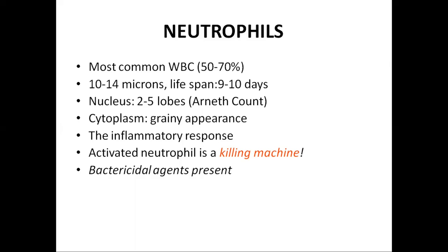In addition to lysosomes, neutrophils also contain powerful bactericidal agents — powerful oxidizing agents formed by peroxisomes — such as superoxide, hydrogen peroxide, and hydroxyl ions. The most important enzyme within the lysosomes is myeloperoxidase, which catalyzes the reaction between hydrogen peroxide and chloride ions to form hypochlorite, which is extremely bactericidal. This is how neutrophils engulf and destroy infectious agents.